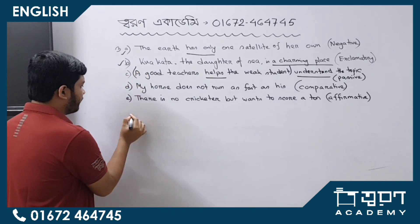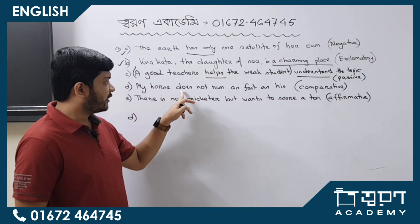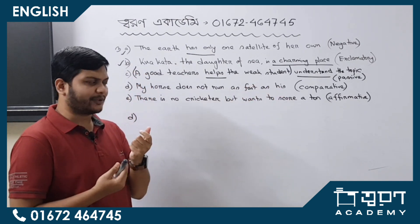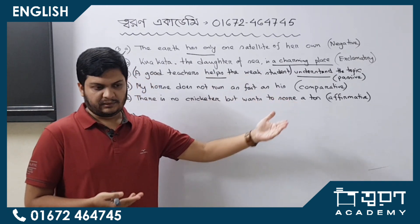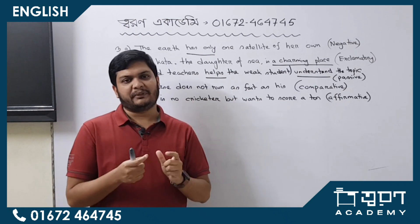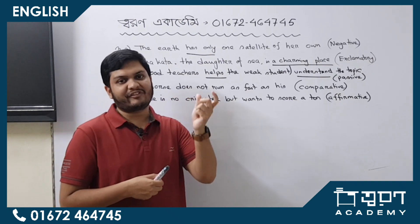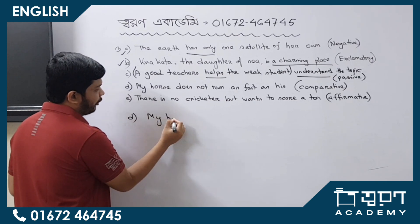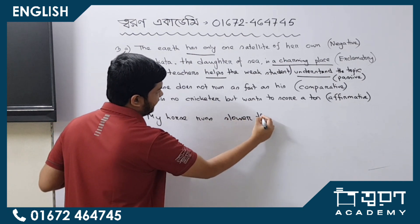Number four, D number: Comparative. The sentence is 'My horse does not run as fast as his.' First, let's understand the meaning — our horse is not fast, meaning our horse is slow. So in comparative form, 'slow' becomes 'slower.' The answer is: 'My horse runs slower than his.'